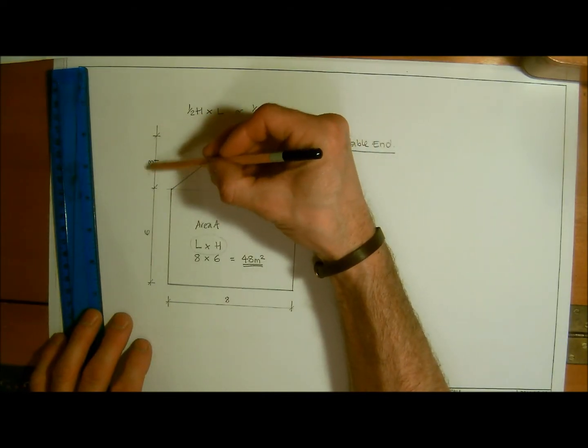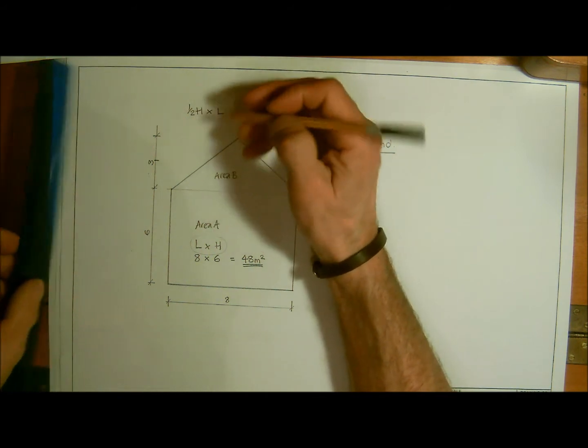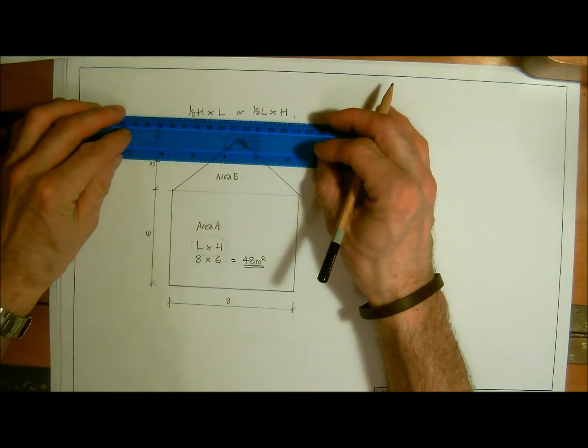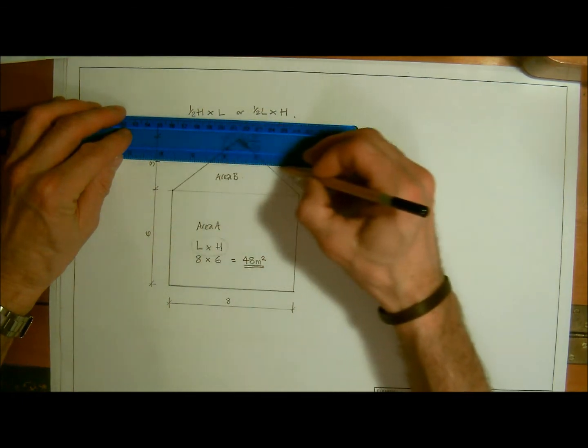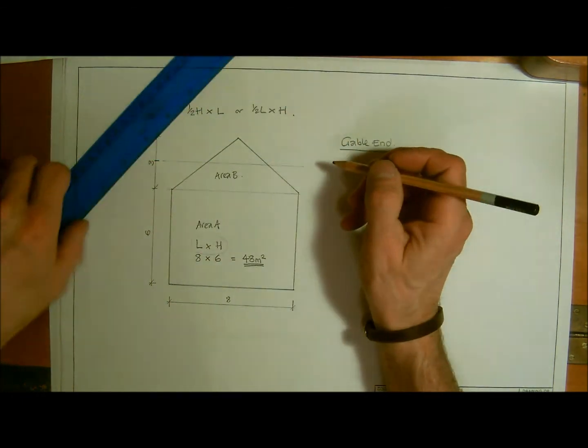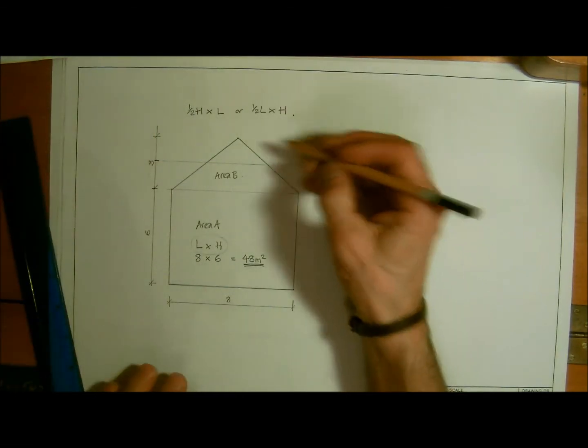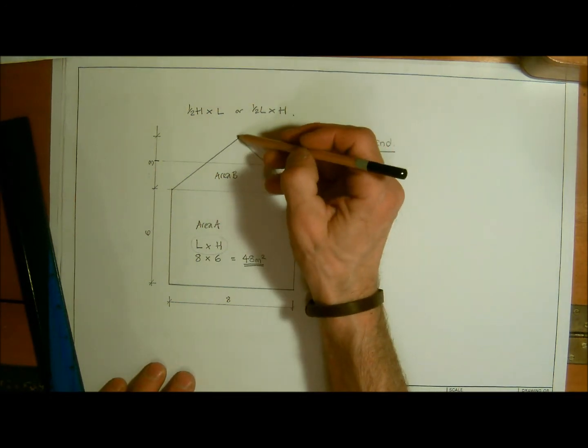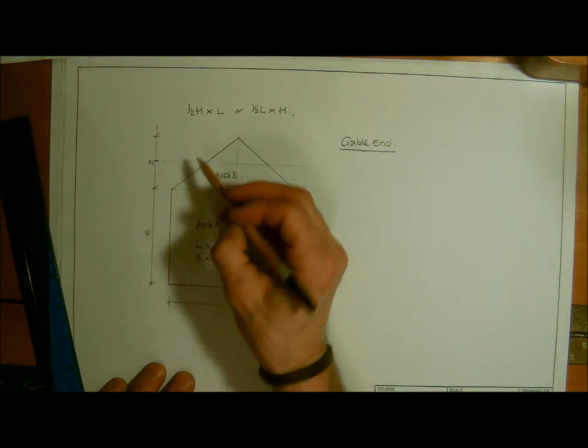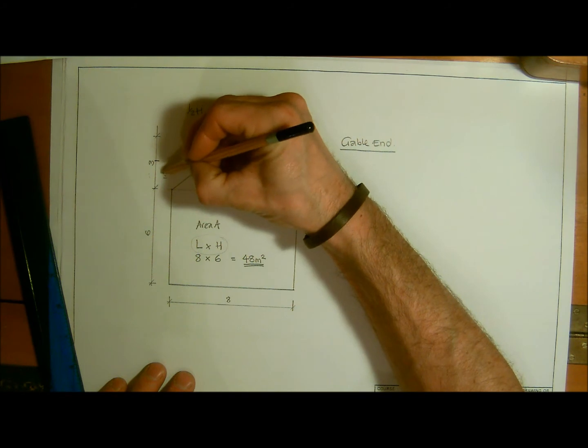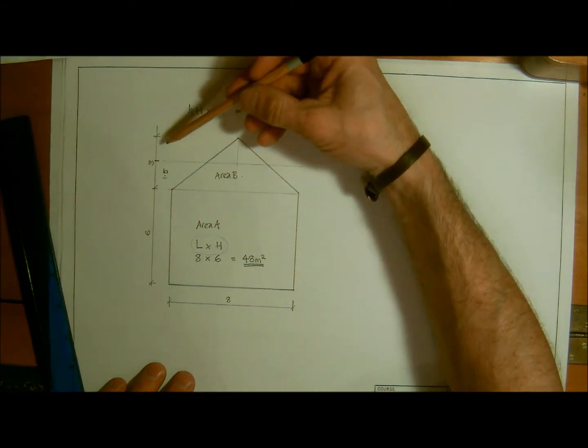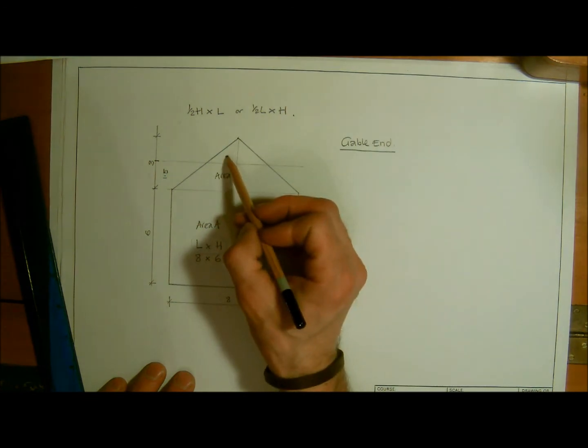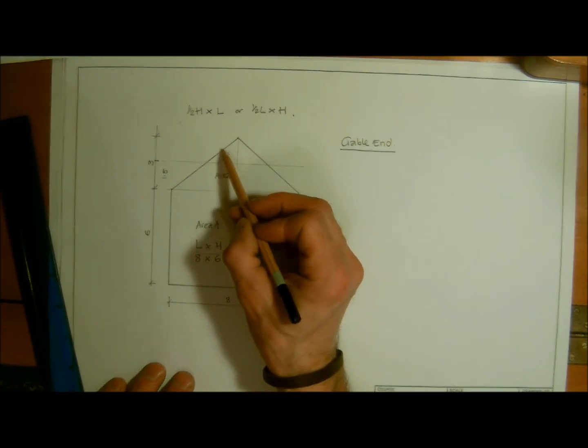If we half the height of this, we've got 3 meters. By going halfway through, just put an imaginary line through there. By halving this to 1.5 meters, which is half of 3, what we're in effect doing is we're taking this and spinning it over.